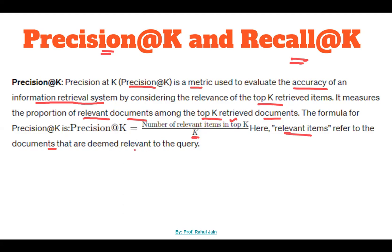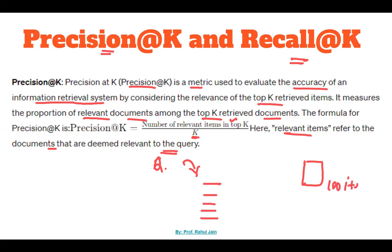Relevant items refer to the documents that are deemed relevant to the query. Basically, in Google, let's say you have put some query — once you put the query you are going to see outputs on the front pages and next pages. Out of these retrieved items, the question is: what are the top K retrieved items? Let's say in your database there are 100 items related to your query, but out of these 100 items only 20 items are going to be fetched.